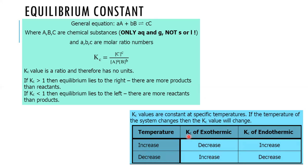For an exothermic forward reaction, if we decrease the temperature, Le Chatelier's Principle says the reaction will increase the temperature by favoring the exothermic forward reaction. The forward reaction becomes faster than the reverse, so more C is produced and amounts of A and B decrease, meaning the Kc value increases. For an endothermic forward reaction the effects are opposite.